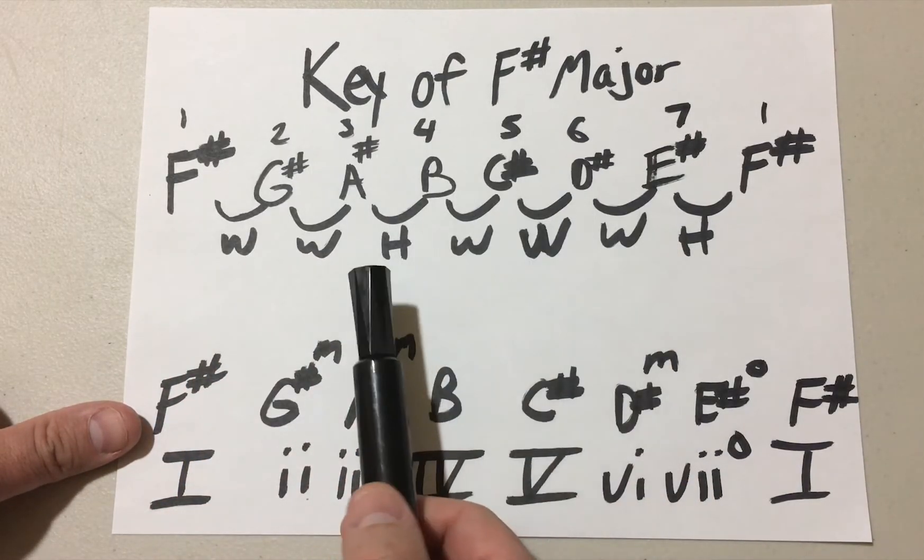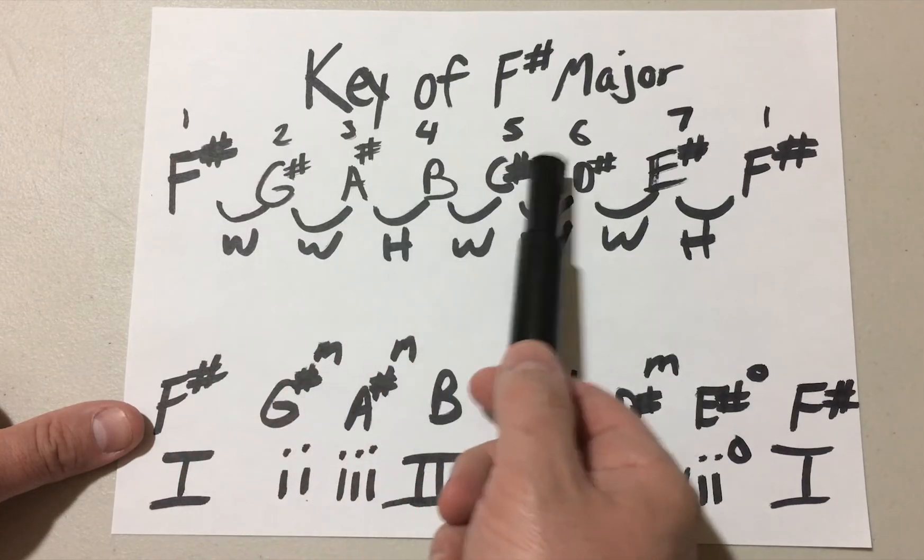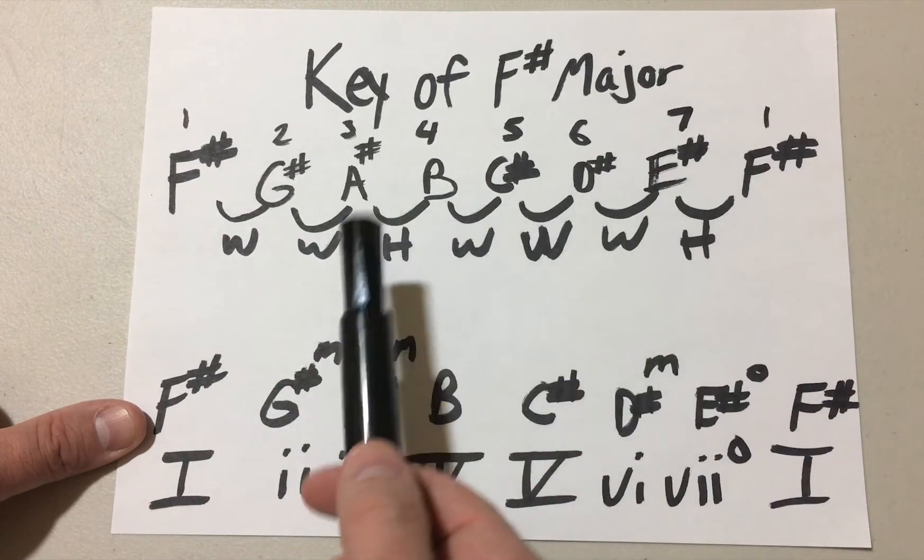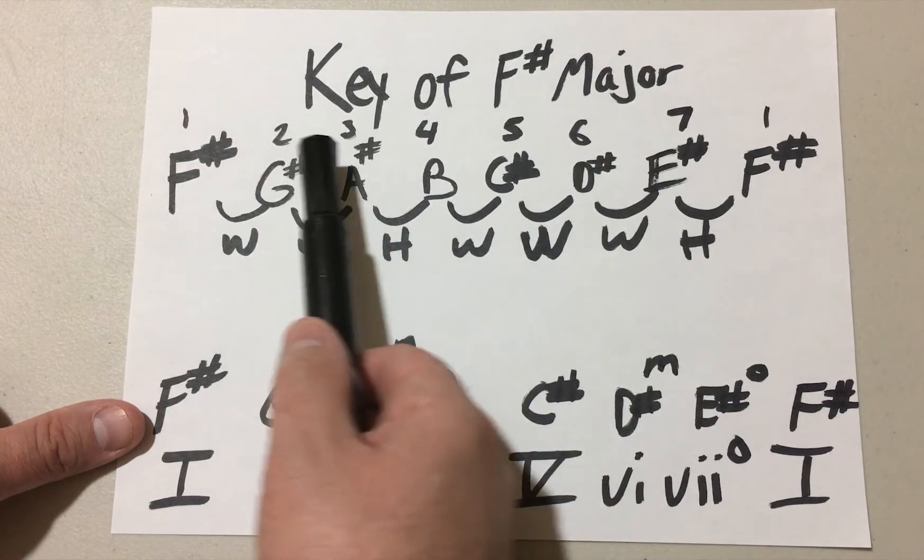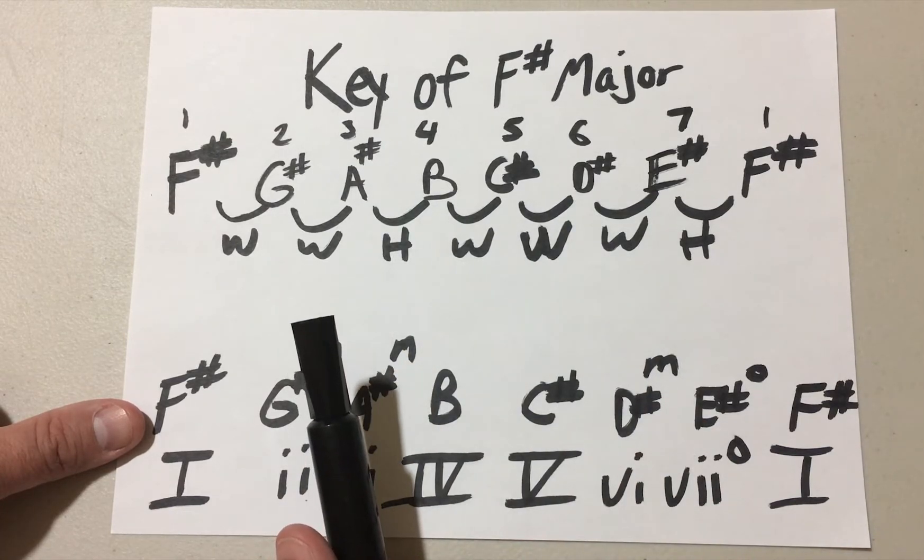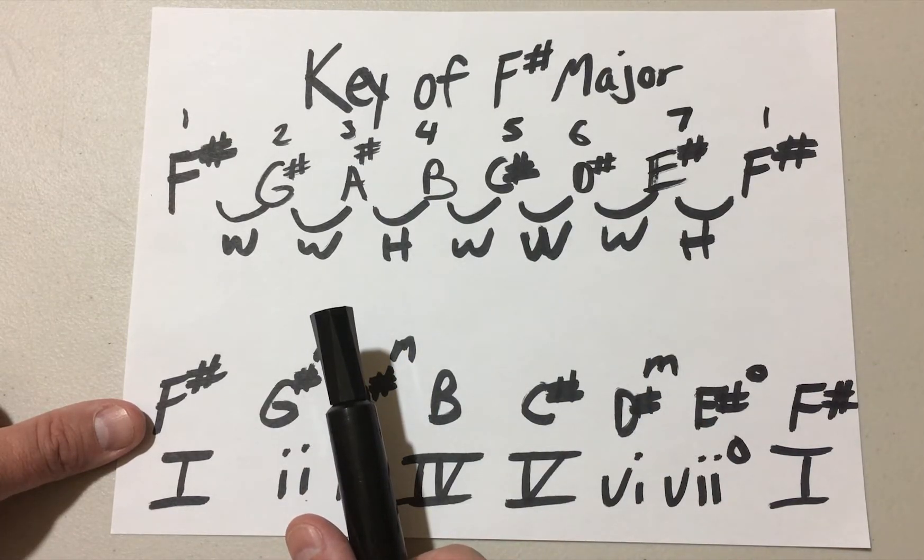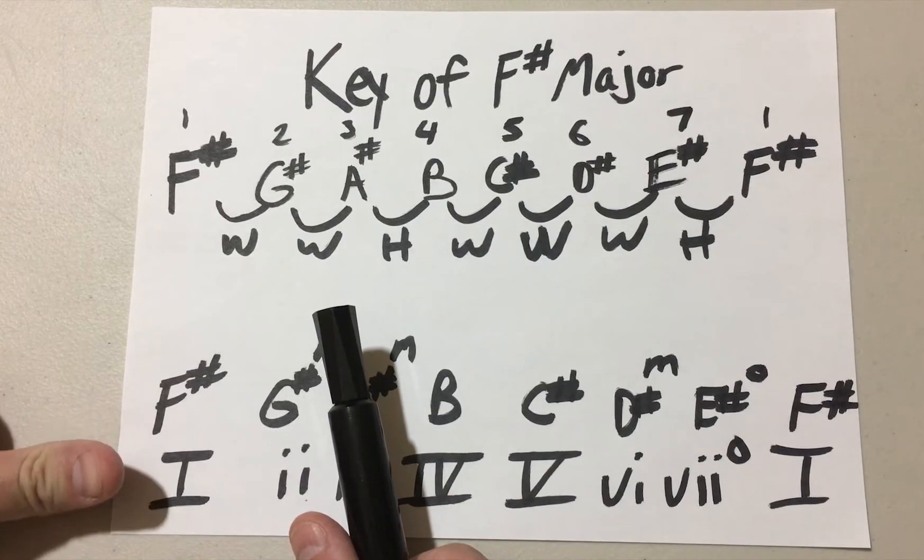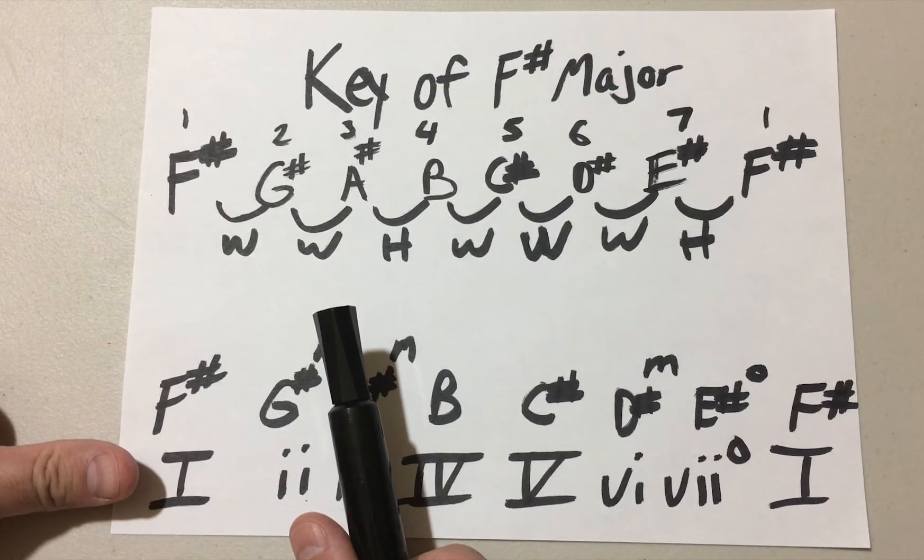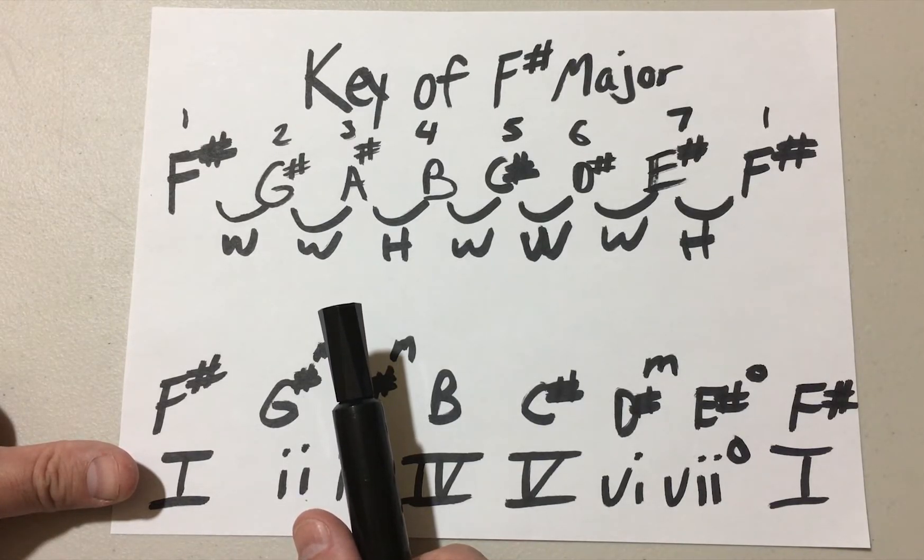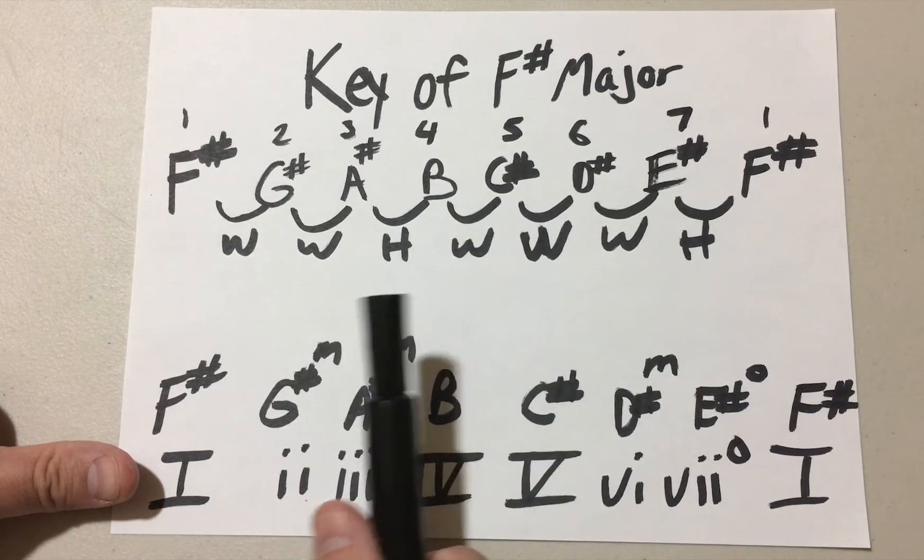Basically the way this works is we started with one sharp, two sharps, three sharps, and so forth. Right now we have one, two, three, four, five, six, seven. There's gonna be one more sharp key that's gonna have all of them sharp, and then you're pretty much all sharped out. And that ties into something else that I want to go into in a couple of videos, and then we are gonna do the flat keys.